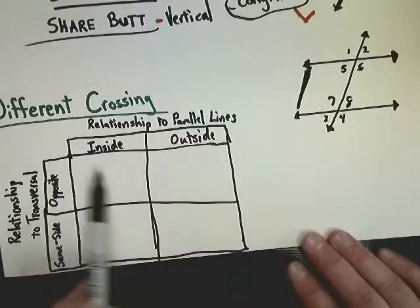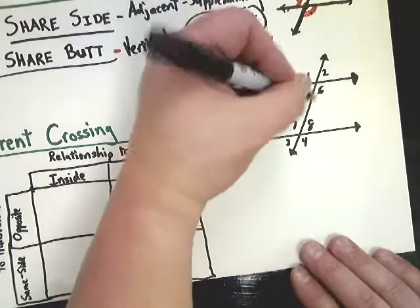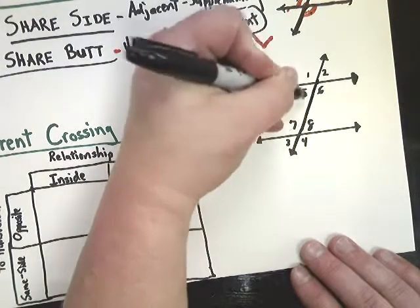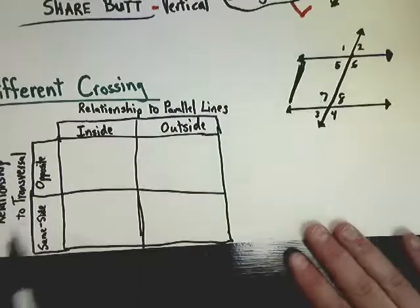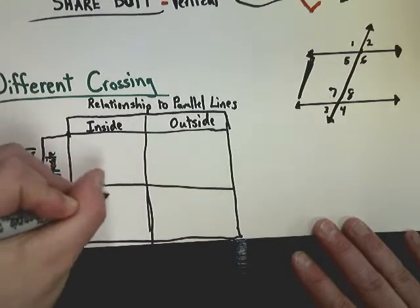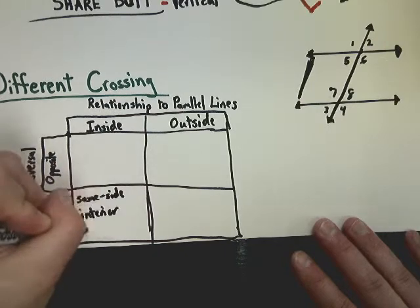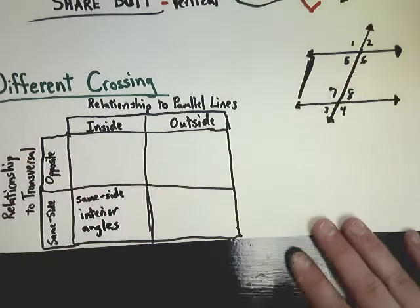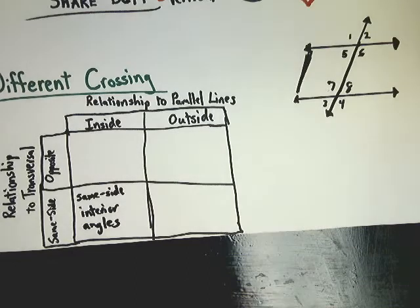The angles inside the parallel lines are 5, 6, 7, and 8. If two interior angles are on the same side of the transversal — like 5 and 7 — we call them same-side interior angles, also known as consecutive interior angles.